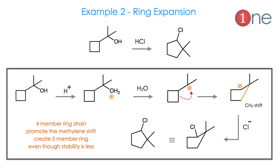The second example involves ring expansion. A cyclic system has an alcohol outside the ring, but the product is a 5-membered cyclic system with chlorine attached. Using Wagner-Meerwein rearrangement: H+ attacks, water eliminates, and a cation forms. Although it is already a tertiary cation, the ring strain of the tert-butyl system is very high. This promotes expansion to a 5-membered ring forming a secondary cation. The stability drives formation of the 5-membered ring via methylene shift. Ring expansion is always possible.